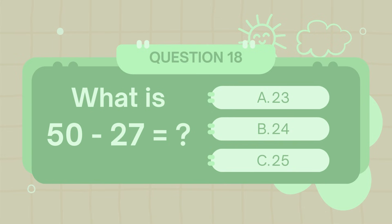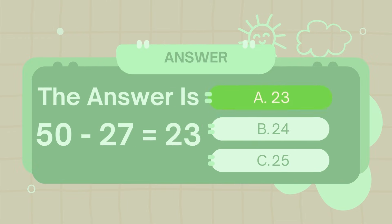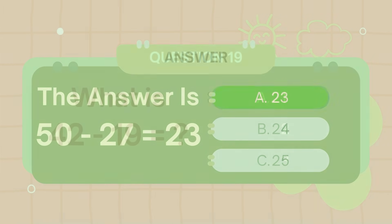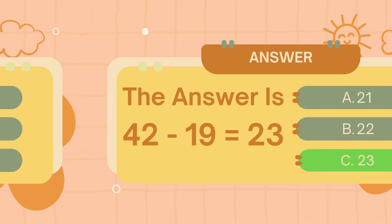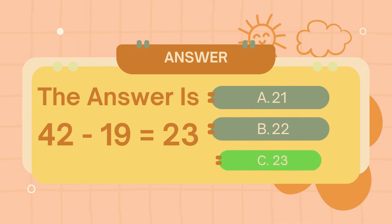What is 50 minus 27? The answer is 23. What is 42 minus 19? The answer is 23.